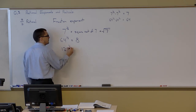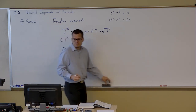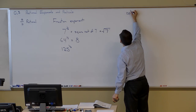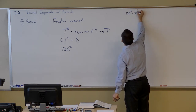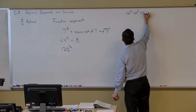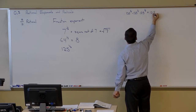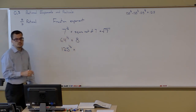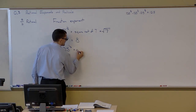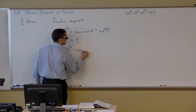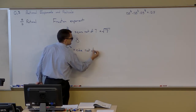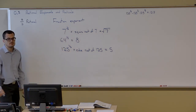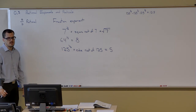If we had something like 125 to the one-third power, what's that mean? If we have a denominator of three, I'm asking: what's the number that if I take it times itself three times gives me 125? This is called the cube root of 125. By the way, in that case it's five — five times five times five gives me 125.